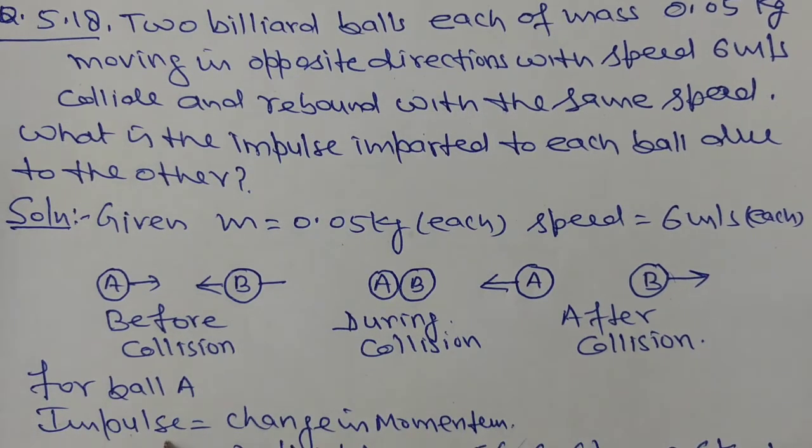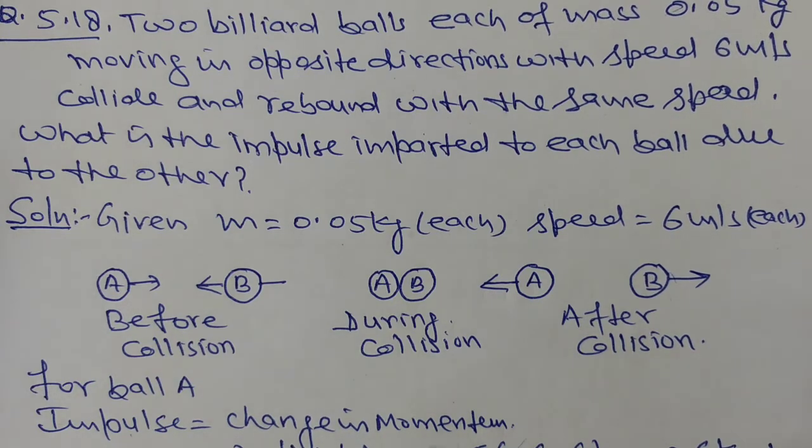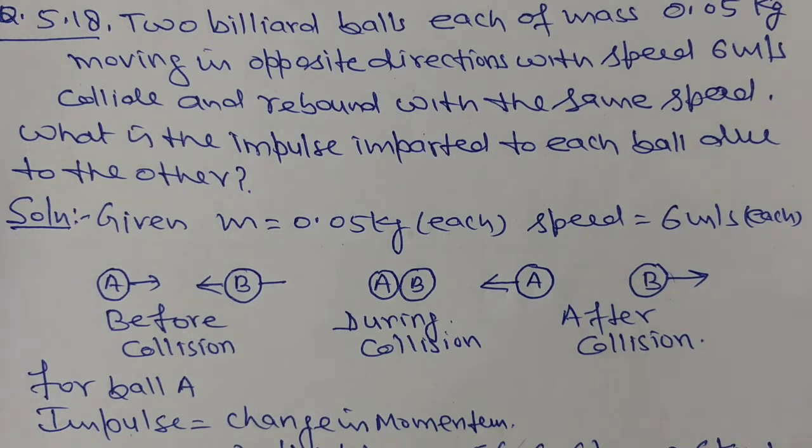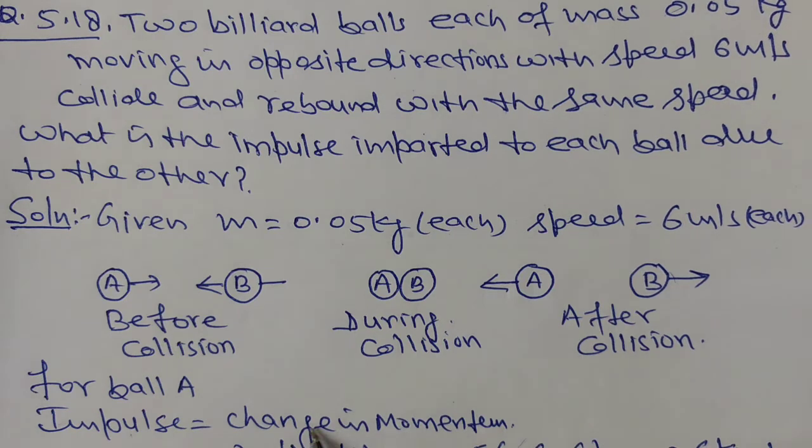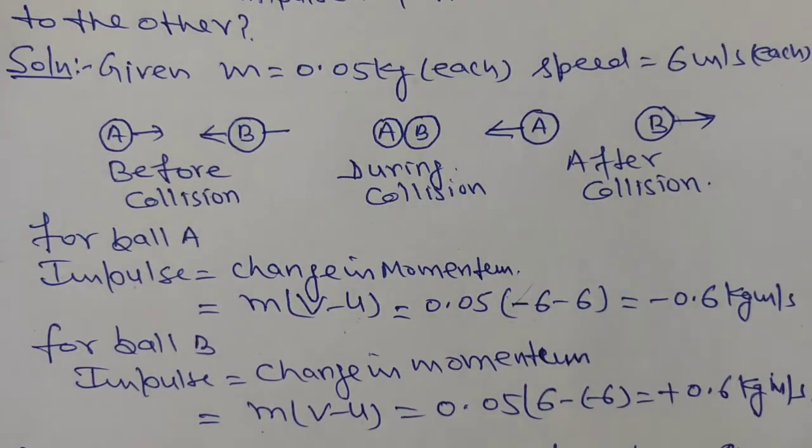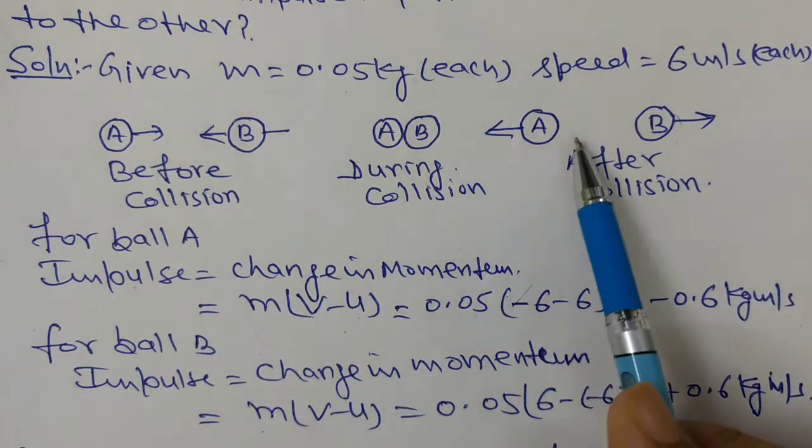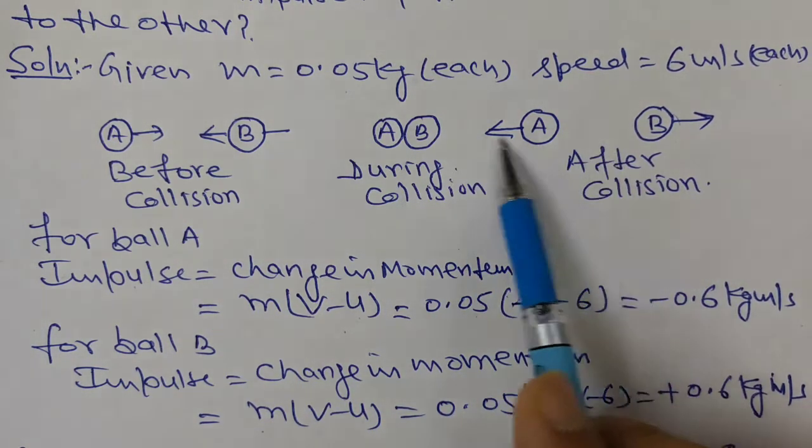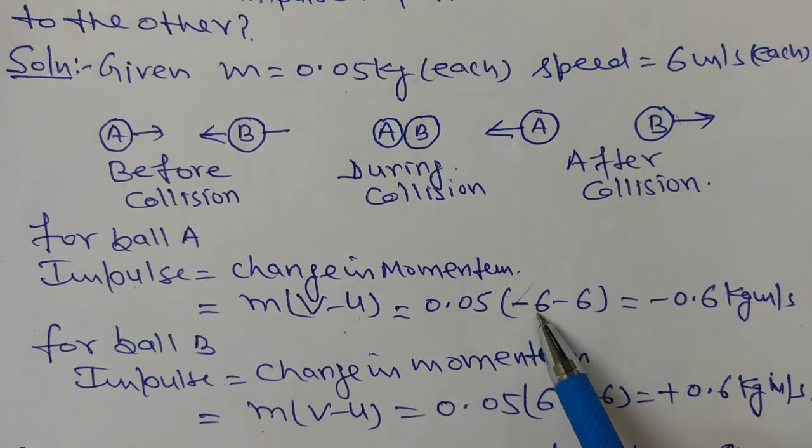Now for ball A, impulse equals change in momentum. Impulse is change in momentum, which means final momentum minus initial momentum. M is the mass of the ball, 0.05, and the velocity of ball A after collision is along negative x-axis, therefore this is minus 6.